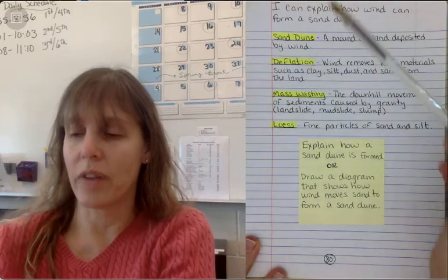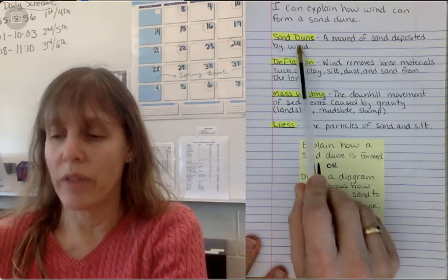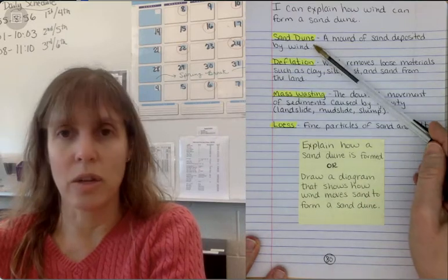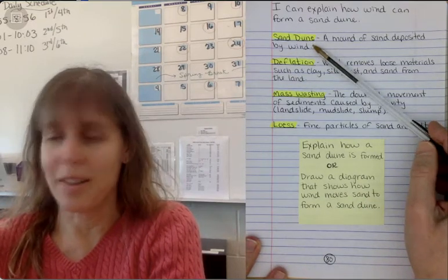So our last learning target for today is I can explain how wind can form a sand dune. So our first term on page 80 is sand dune. Say it with me: sand dune. It's a mound of sand deposited by wind.